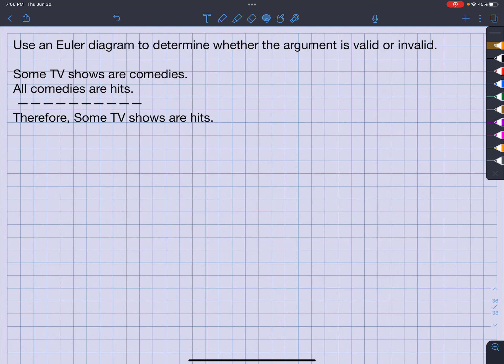What's up? It's your man, Jimmy Chan. All right, so here we go. We have to use, again, the Euler diagram to show if this is valid or invalid.